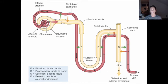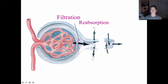Finally, excretion is whatever is left — whatever exits the collecting duct and moves into the renal pelvis. Here's another version of the same picture, abbreviated. You can see the glomerulus where big things stay in and small things filter — that's filtration. Reabsorption is tube to blood, secretion is blood to tube, and excretion is whatever is at the end of the collecting duct.